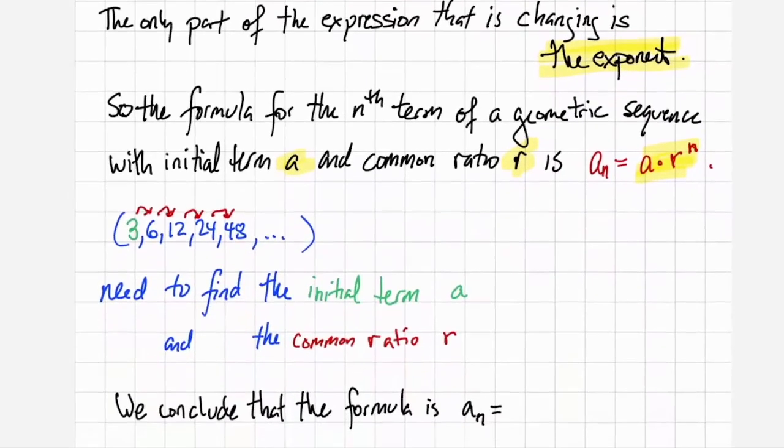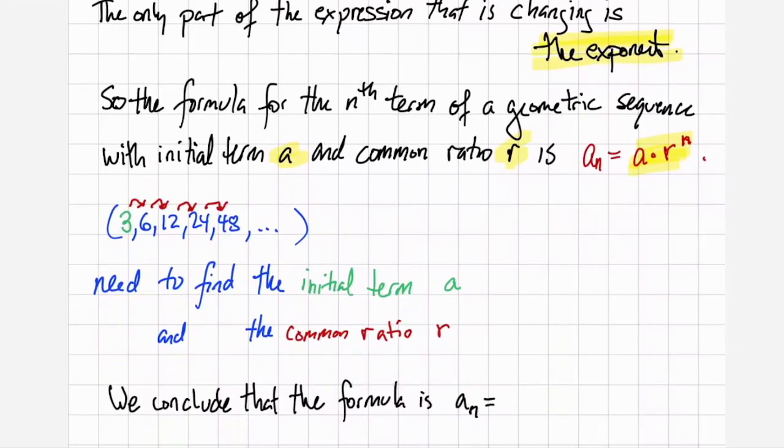As an example we have the sequence 3 6 12 24 48 etc. We see that our initial term is 3, the common ratio we're multiplying by 2 each time. And so the formula for a sub n is going to be 3 times 2 to the n.